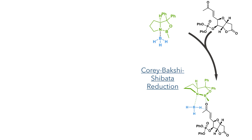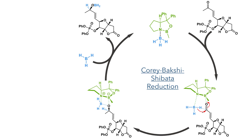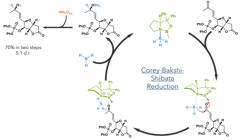The ketone, installed with the Wittig reaction, was then reduced using a Corey-Bakshi-Shibata reaction. A borane adduct formed from the reaction of the CBS catalyst with DMS borane first adds to the ketone, where the oxygen coordinates to the boron of the CBS catalyst and this allows for the hydride transfer from borane to be directed from one face. The boron adduct formed by this addition is then broken by another equivalent of borane. This BH2 adduct is then hydrolyzed by aqueous ammonium chloride to form the target alcohol in a 70% yield with a 5 to 1 DR over two steps.